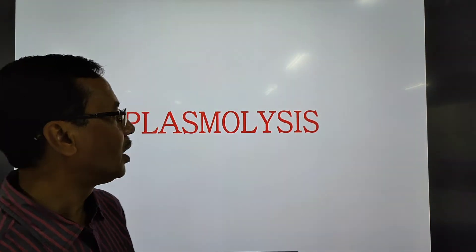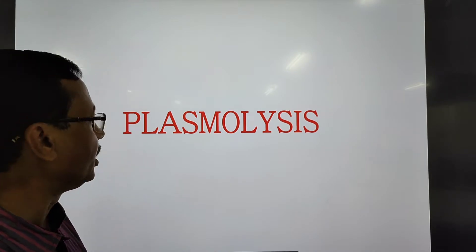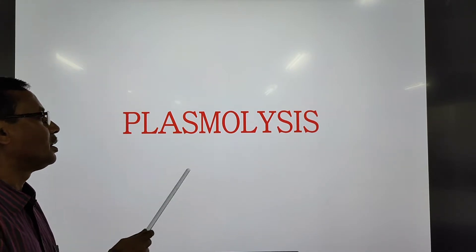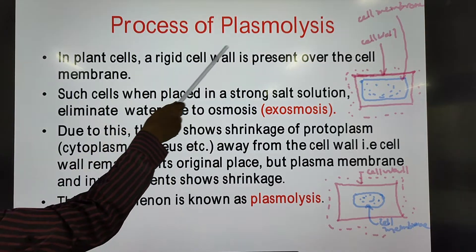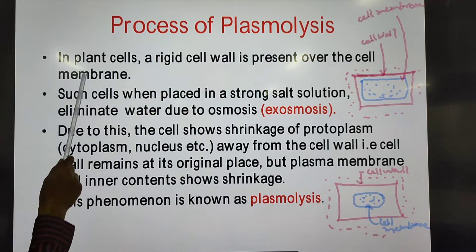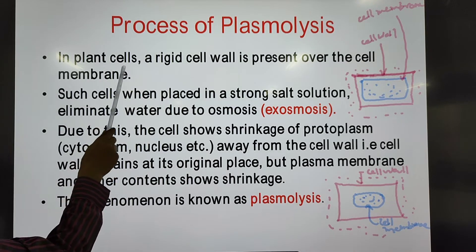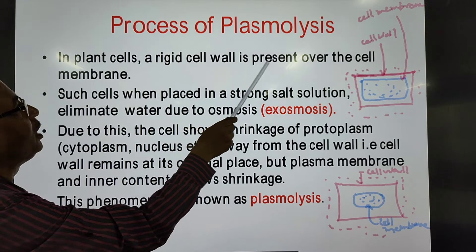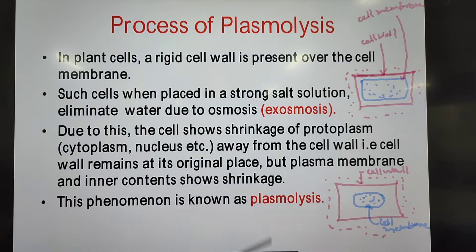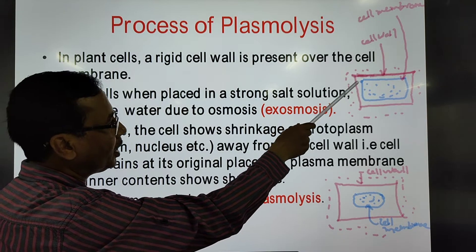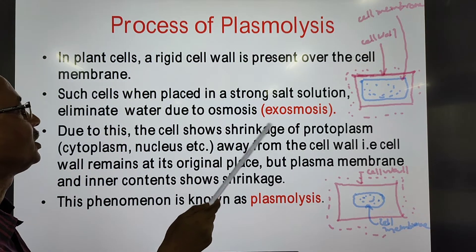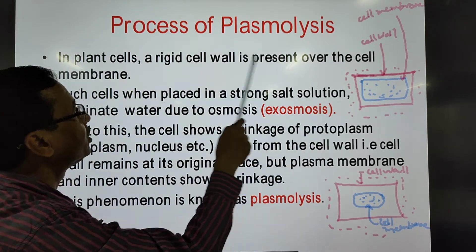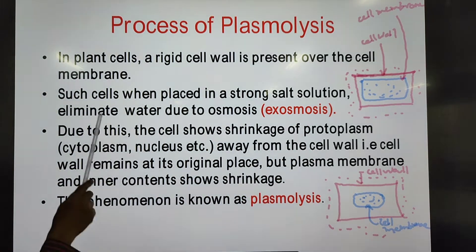We are going to discuss an important phenomenon associated with cells — plasmolysis. In plant cells, a rigid cell wall is present over the cell membrane. Because of the complex structure, the cell wall is very rigid and surrounds the cell membrane.